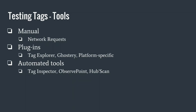Finally, you can use different types of automated tools. Our tool, Tag Inspector, is what I would always recommend. Some other tools out there — ObservePoint, HubScan, and Ghostery also does some scanning as well. There are ways of automating the process — you can automate validation, automate tag auditing, if you want to go that route.